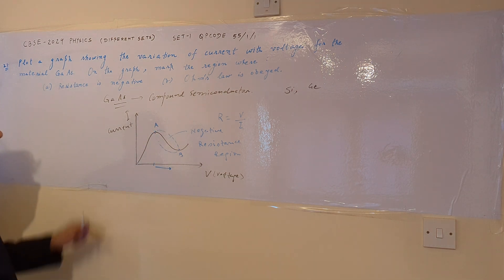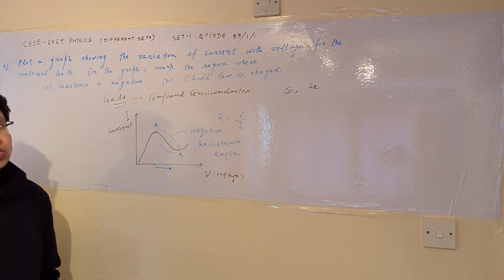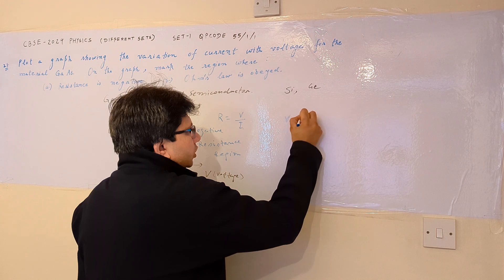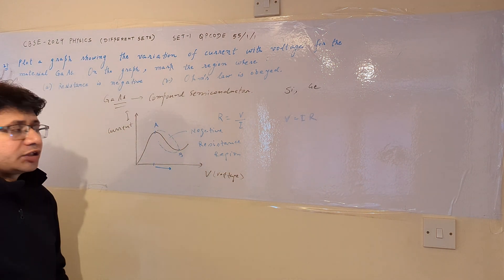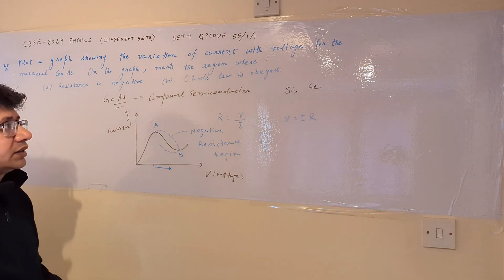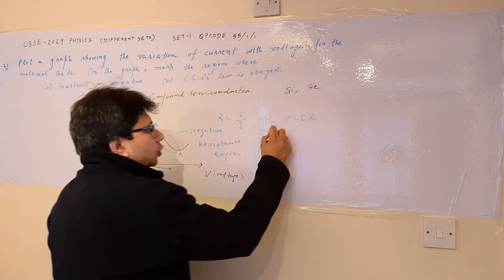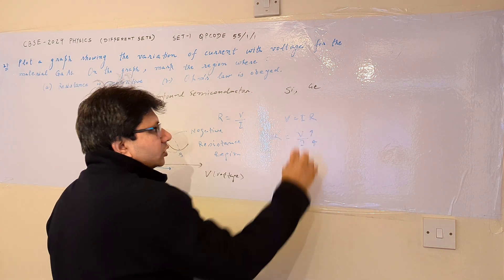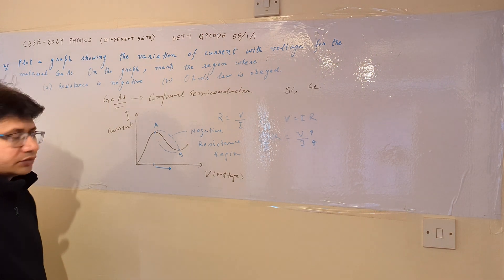For Part B, we need to identify the region where Ohm's law is obeyed. Ohm's law states that V = IR. For Ohm's law to hold, resistance must be positive, meaning when the voltage is increasing, the current must also be increasing.